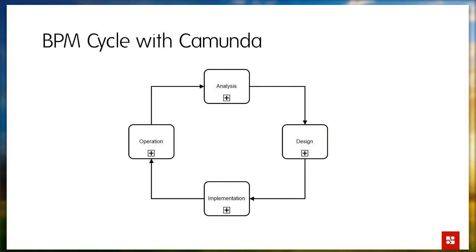The best way to talk about this release is to look at the typical BPM cycle. It's not Camunda-specific — it's really how we typically work and improve business processes. We have the four stages: analyzing as-is processes looking at weaknesses and potential improvements; the design phase, which is about creating to-be process models; the implementation stage covering both technical and organizational implementation; and once completed, going into production to actually operate those processes, with a continuous improvement lifecycle.